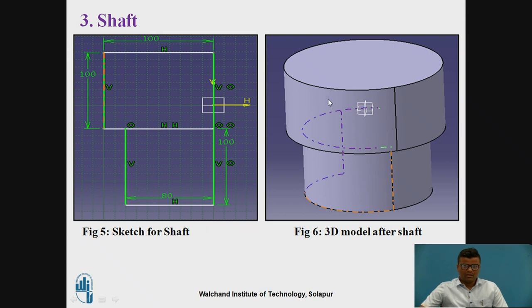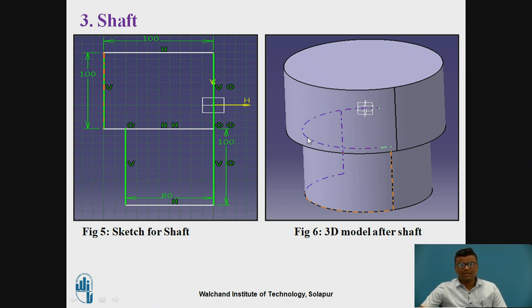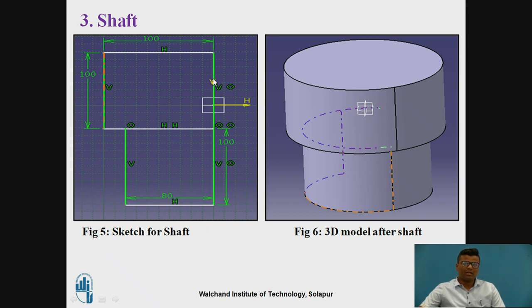Shaft. Before going to the 3D shaft, we have to create some 2D sketch. Here we are creating rectangles, side to the axis. After providing the shaft tool with respect to this axis, we can create this shaft. This will be a 360-degree rotation. By rotating the rectangle in a circular base by 360 degrees, you can create a different shaft — this acts as a cylinder, a solid shaft. This is the 2D sketch, and after rotating about this axis by 360 degrees, you can get the 3D model after the shaft operation.